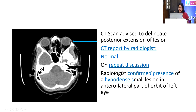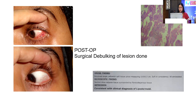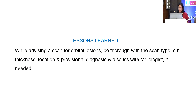We went back and discussed with the radiologist, who then confirmed there was a small hypodense lesion. The problem was that we had advised axial and coronal scans at 2 mm as usual, and we mentioned lipodermoid of the left eye, but forgot to mention the zone — it was in the anterior lateral part of the orbit. Because it was very small and the location wasn't specified, the radiologist missed it. We then operated and histopathology confirmed the diagnosis.